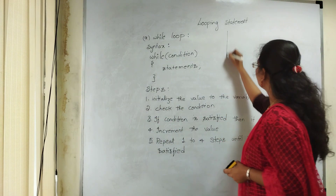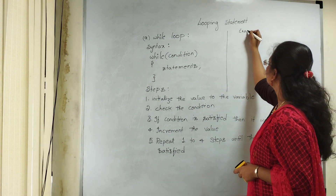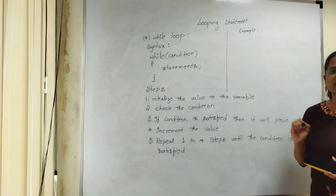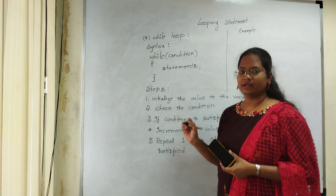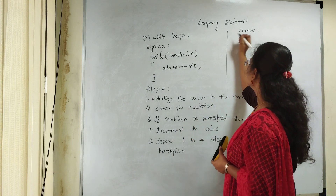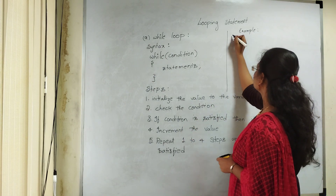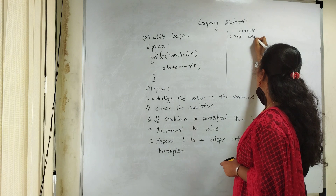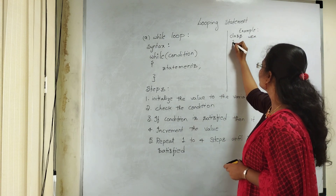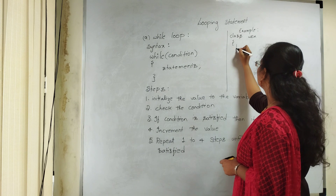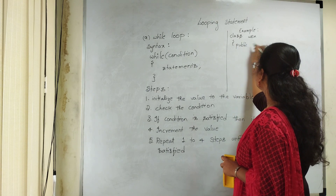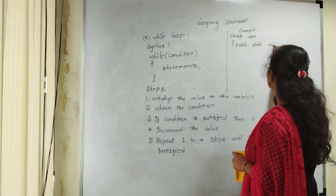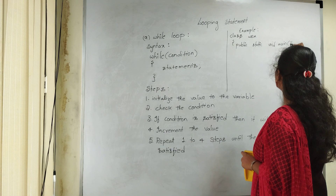Let us see one example — how we are going to write down a while loop. Write a Java program to print 1 to 10 numbers. So the class is 'WhileLoopExample'. You need to write down the main method: public static void main(String[] args).